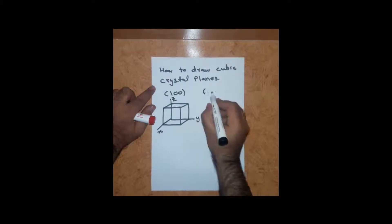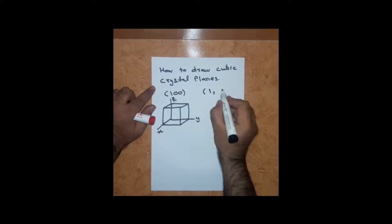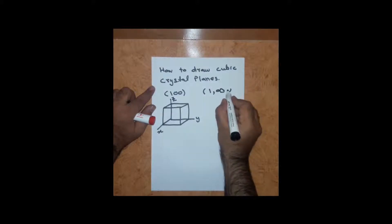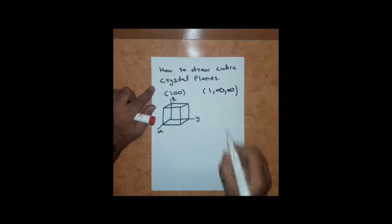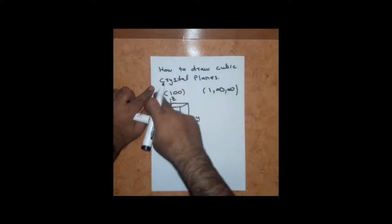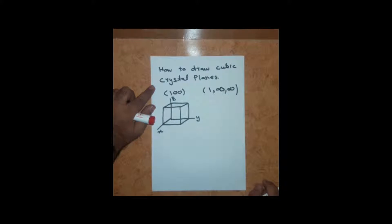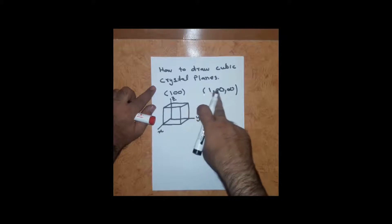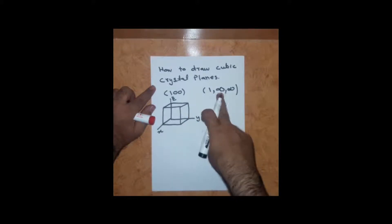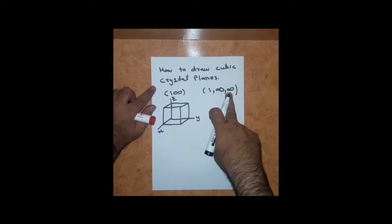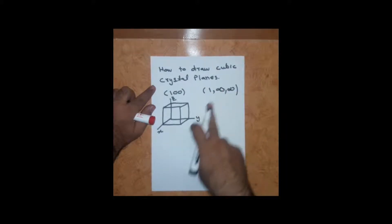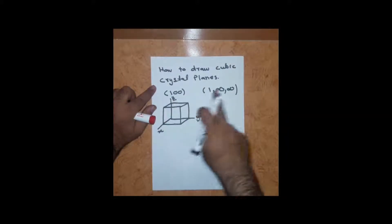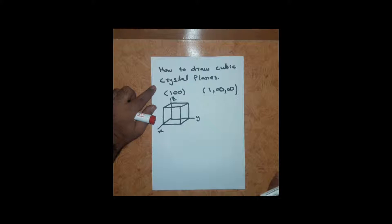Taking reciprocals of (1 0 0) we get 1, infinity, and infinity. This means the (100) plane will have an intercept at the x-axis equal to one, and no intercept at the y-axis or z-axis — the intercepts at y and z are at infinity.